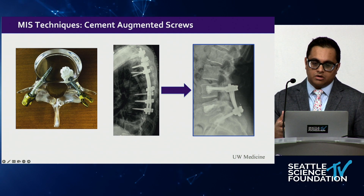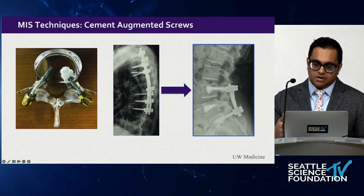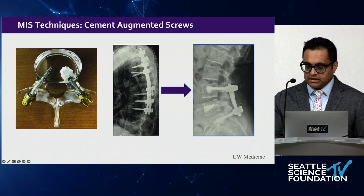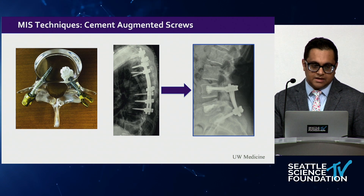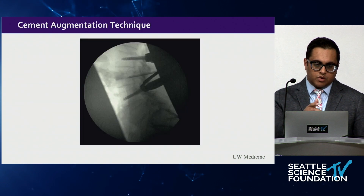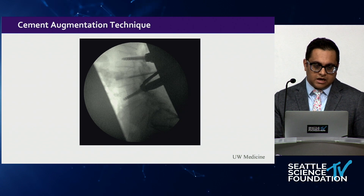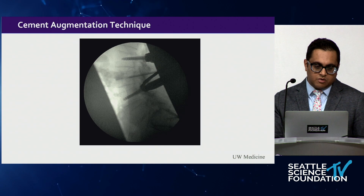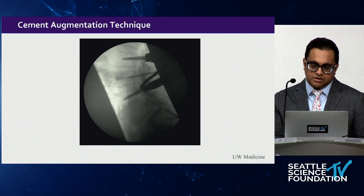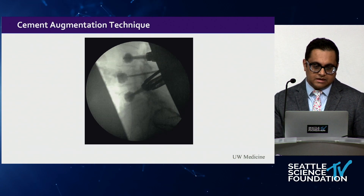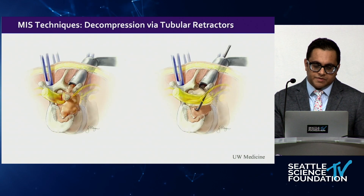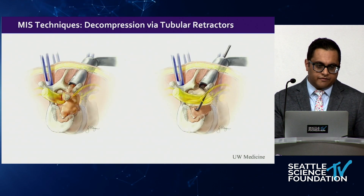Here's a quick shot from our OR showing lateral fluoroscopy with percutaneous screws above and below, and a Jamshidi needle at the tumor level for a vertebroplasty.